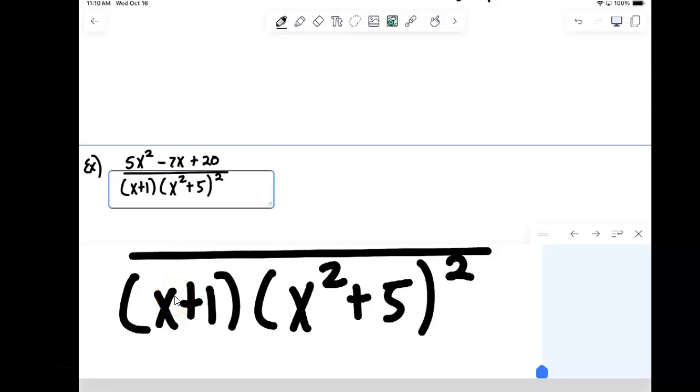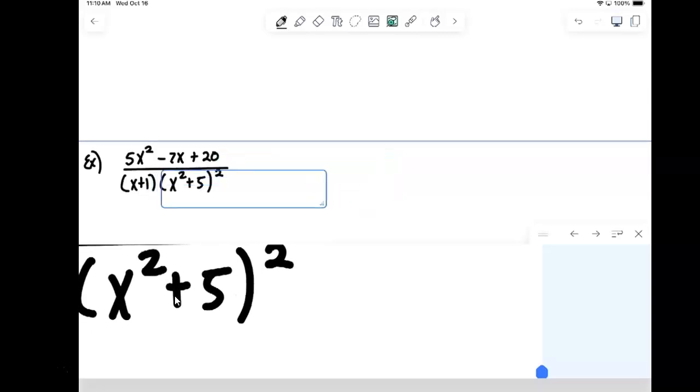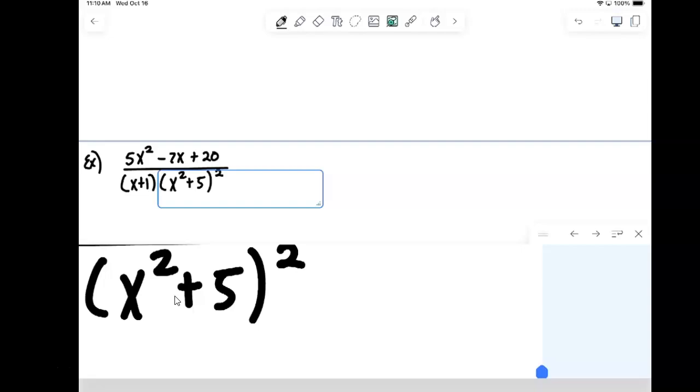All right, so welcome back. We've seen the decomposition so far for when we had just linear factors, also repeated linear factors. And in the example we did before this one, we were dealing with a quadratic factor as well. Well, this time we have the fourth scenario that we could encounter, fourth possibility.